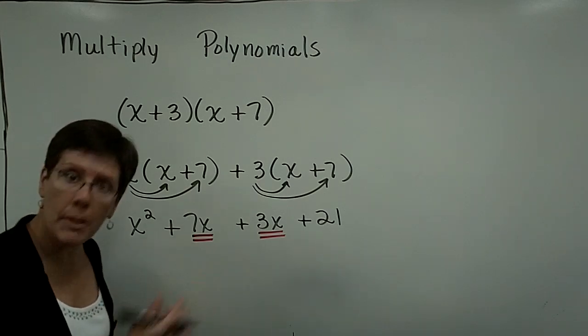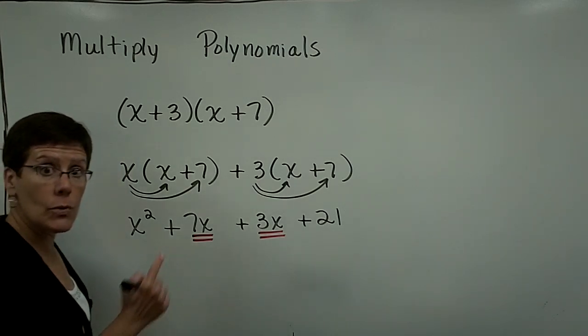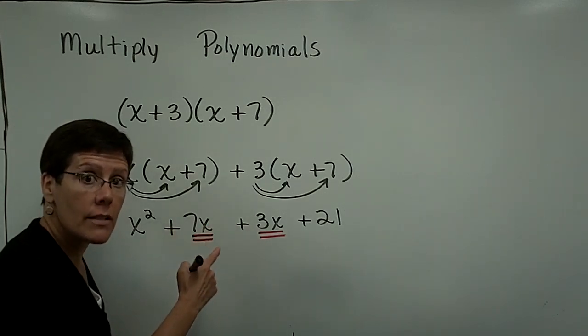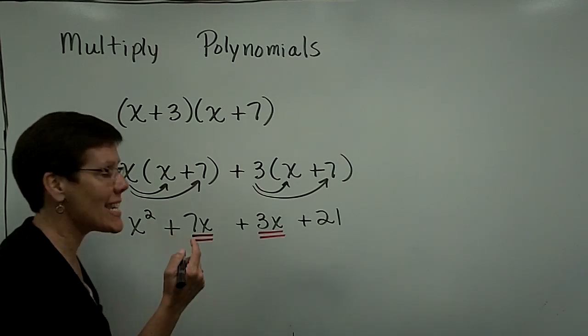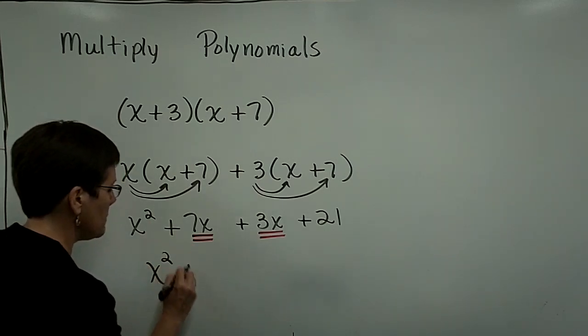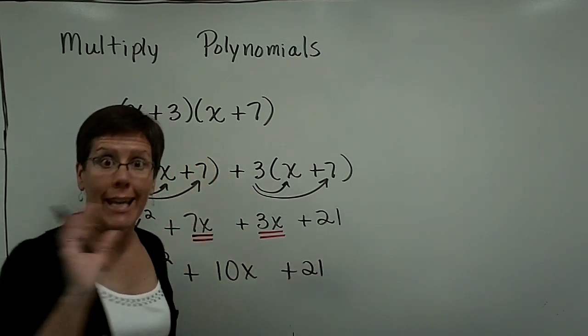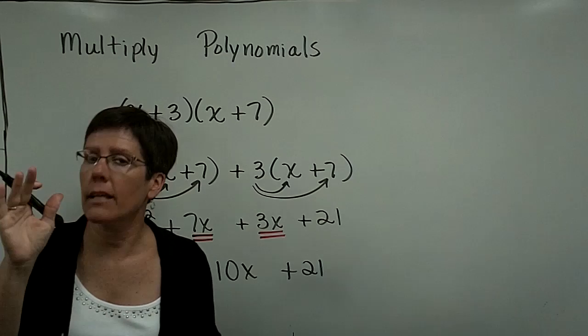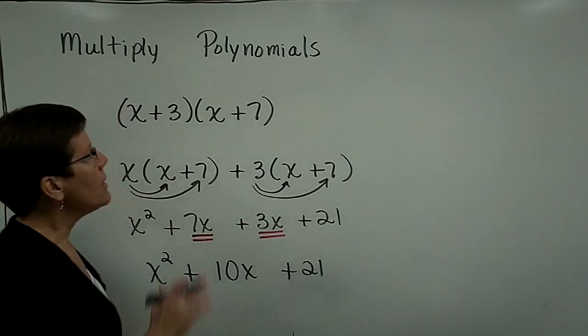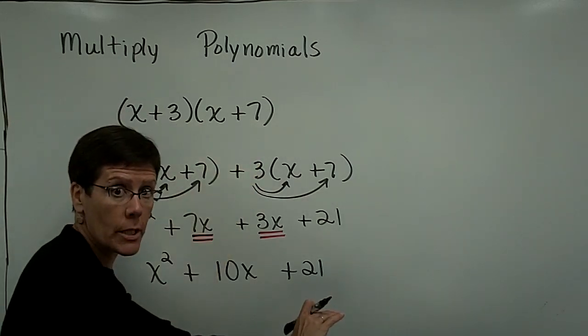if you have like terms typically in the middle, you would collect those. These are like terms. There's 7x and 3x for a total of 10x. So this x squared comes down, plus that 10x, plus that 21, and I'm all done. No collecting. There are no terms to be collected here. The product of these two binomials is this trinomial.